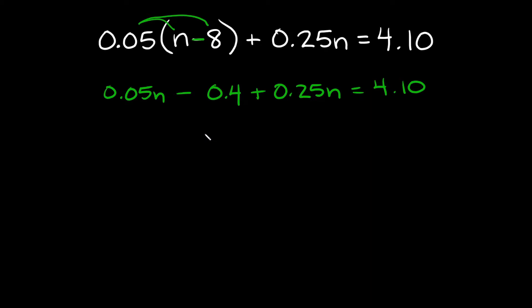Now what do we do? Well as you can see we have a variable, the n right here and we also have an n right here but this is just a number. It doesn't have a variable on it. So since this is just a number we want to move it to this side because this is also just a number, because we want to combine like terms.